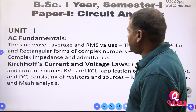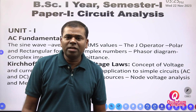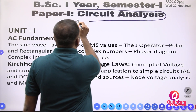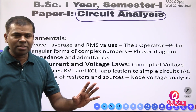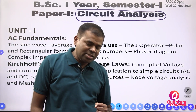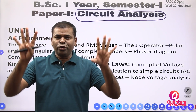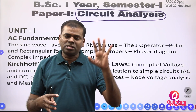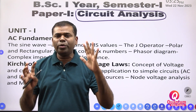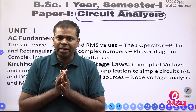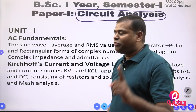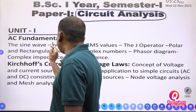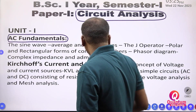Let's look at what is in your syllabus for Paper One. Your paper title is Circuit Analysis. In Circuit Analysis there are four units in the theory exam, and you will get 80 marks. Each and every unit contains 20 marks.